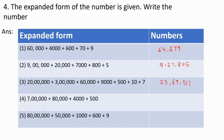Next: 7 lakh plus 80,000 plus 4,000 plus 500. The number is 7,84,500. Next: 80 lakh plus 50,000 plus 1,000 plus 600 plus 9. The number is 80,51,609.